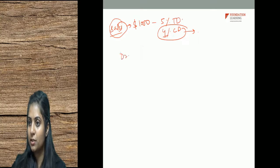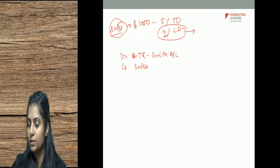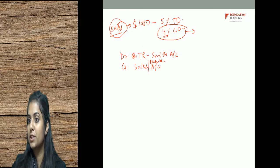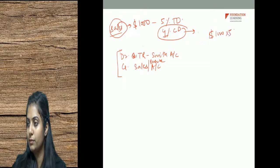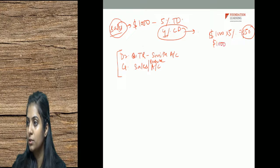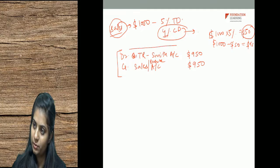At the time of sale, trade receivable is debited and sales is credited. Trade discount is not recorded — so the books show sales of $1,000 minus $50 (5% of $1,000) = $950. That is the first entry: debit trade receivables Smith, credit sales $950.